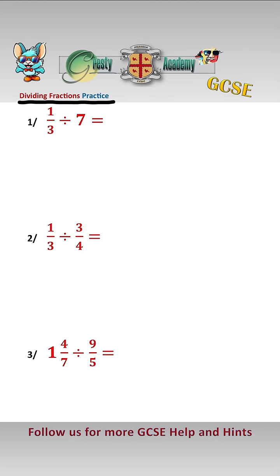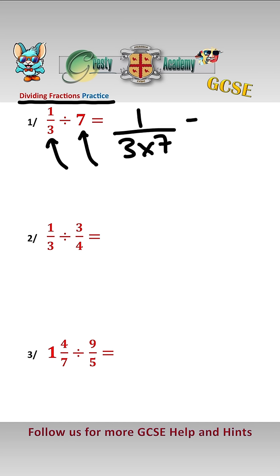Let's do some dividing fractions practice. The first type is dividing a fraction by a whole number. All we do is multiply the denominator by the whole number, and that gives us 1 over 21 as our answer.